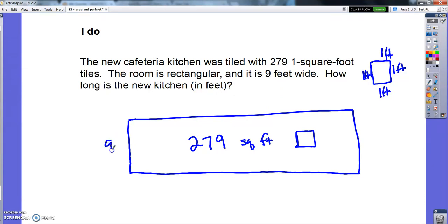So we've got this new kitchen and there are 279 square feet in it. 279 of these one square foot tiles inside of it. And it's 9 feet wide. So that means 1, 2, 3, 4, 5, 6, 7, 8, 9. I can imagine of those tiles, 9 of them kind of go along this outside. So I've got 9 tiles going this way because it's 9 feet wide. And I've got 279 of those tiles in there all together. So I want to figure out how long is the kitchen.